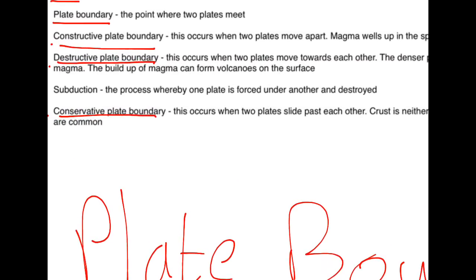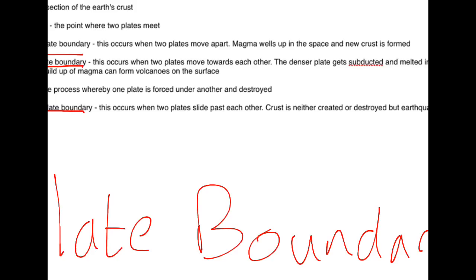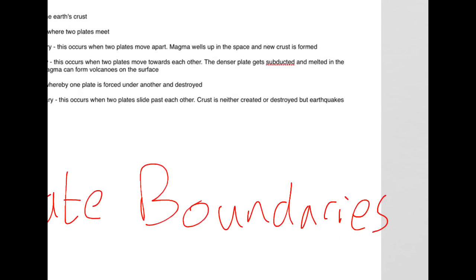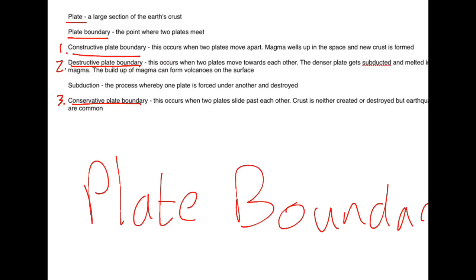The second plate boundary is a destructive plate boundary. This occurs when two plates move towards each other. The denser plate gets subducted and melted in the magma. The build up of magma can form volcanoes on the surface.